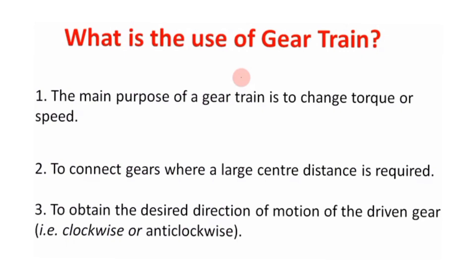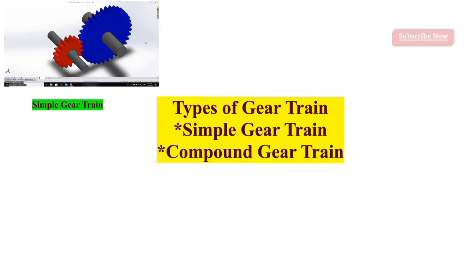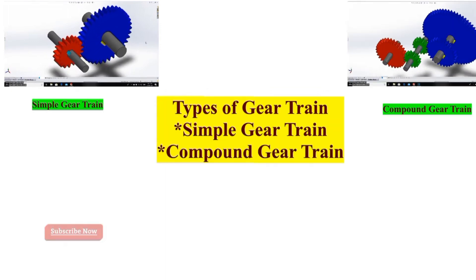The main purposes of a gear train are: first, to change torque or speed; second, to connect gears where a large center distance is required; third, to obtain the desired direction of motion of the driven gear, whether clockwise or anticlockwise. Types of gear trains include: simple gear train and compound gear train.